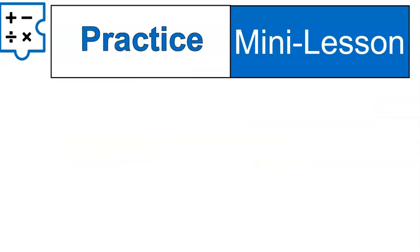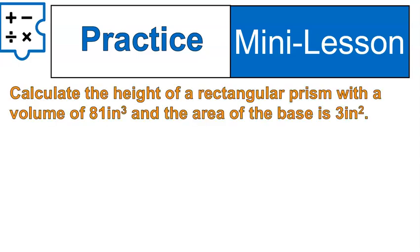Now we're going to practice. Calculate the height of a rectangular prism with a volume of 81 cubic inches and a base area of 3 square inches. Go ahead and try that one out — pause and practice. Welcome back. Is that the formula you used? Perhaps you used that pyramid.